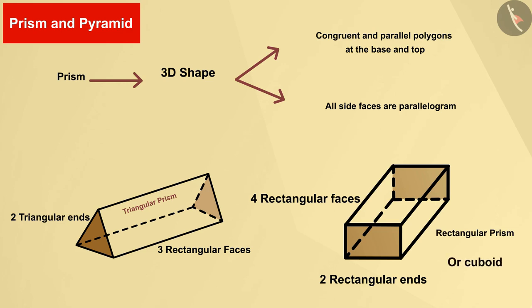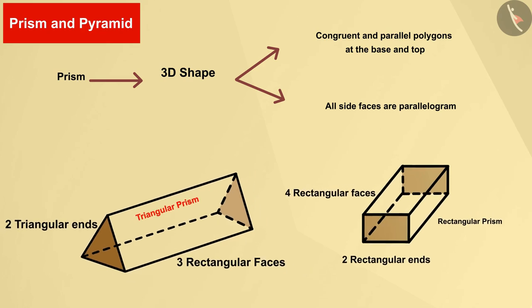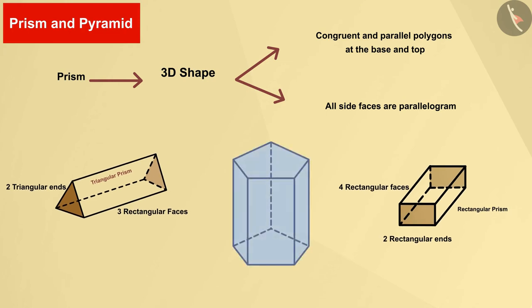If you notice, you will see that the prisms are named according to their base and upper end. As its ends are triangular, so it is a triangular prism. Its ends are pentagon, therefore it is a pentagonal prism. Similarly, you can also identify the name of the prism according to the base and upper end.